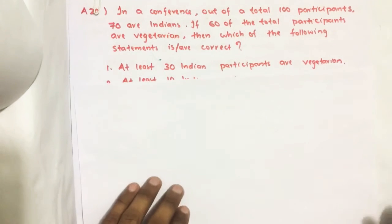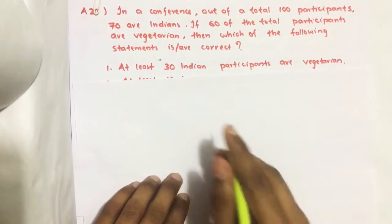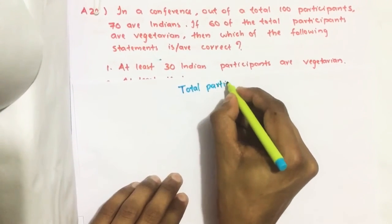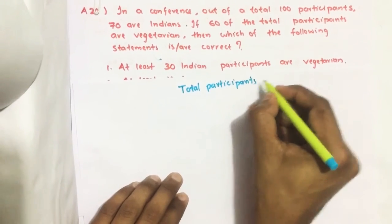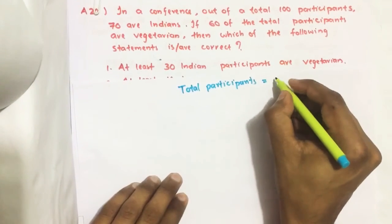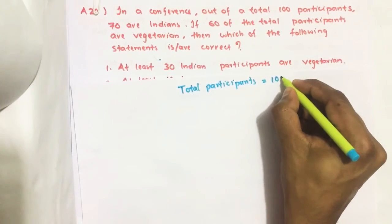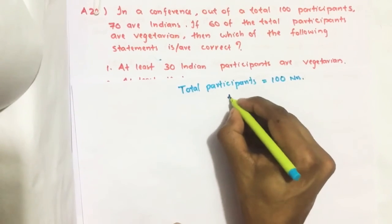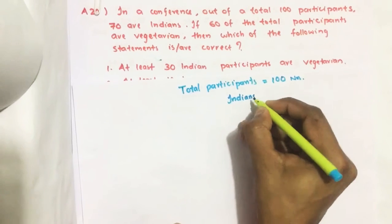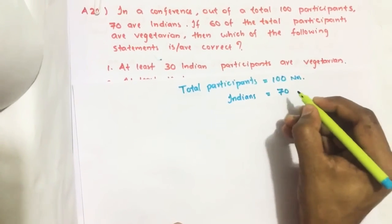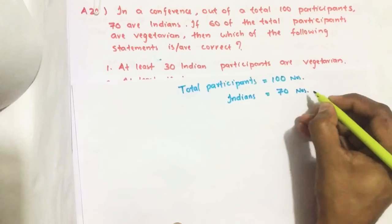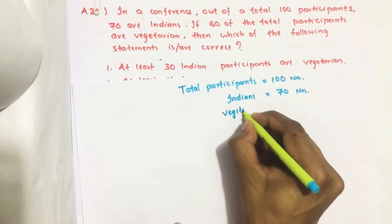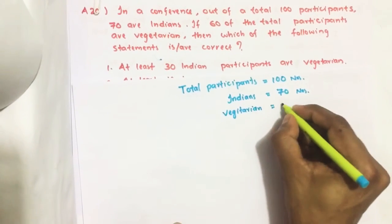So first we see what are the given data. Total participants equal to 100 numbers. Out of this, how many are Indians? 70 numbers. How many participants are vegetarian? 60.